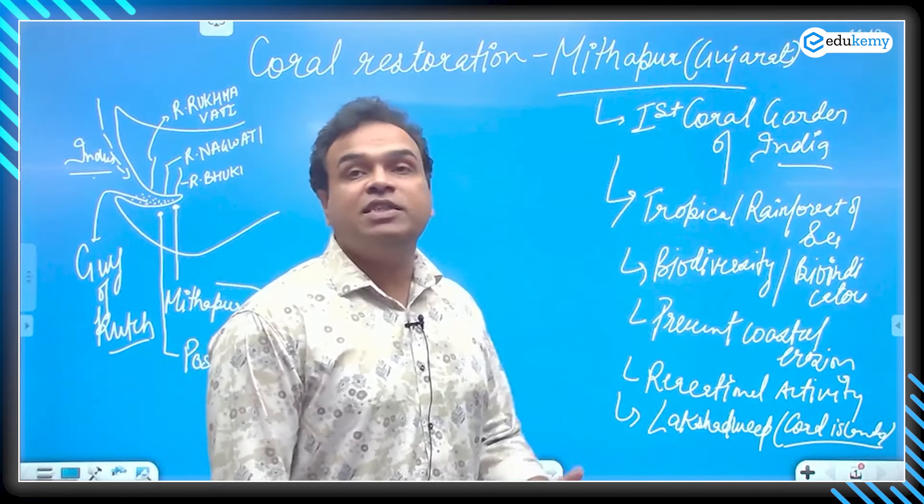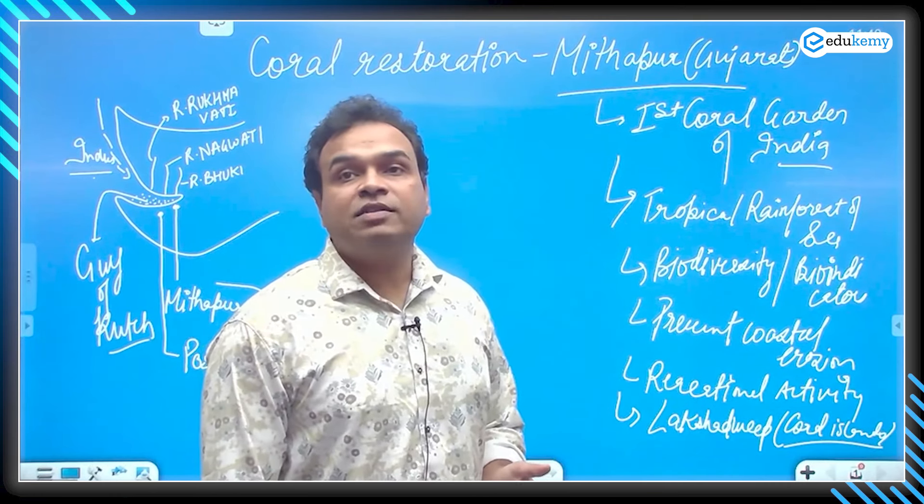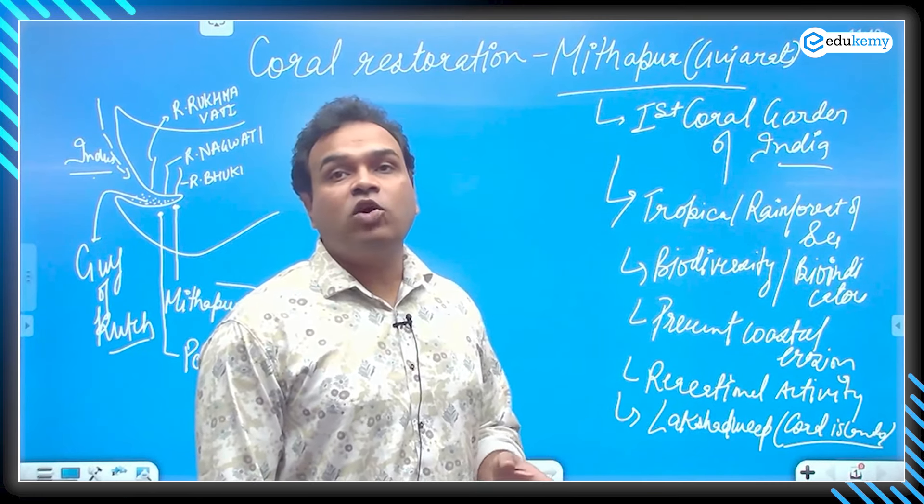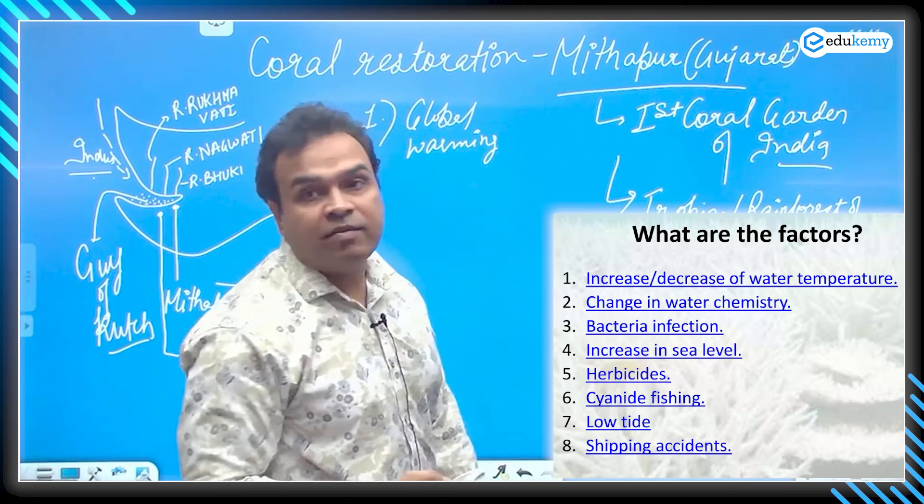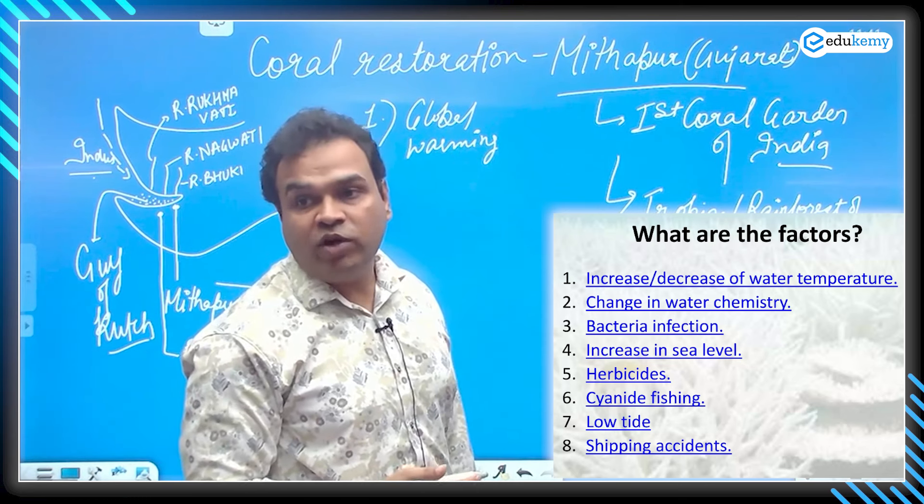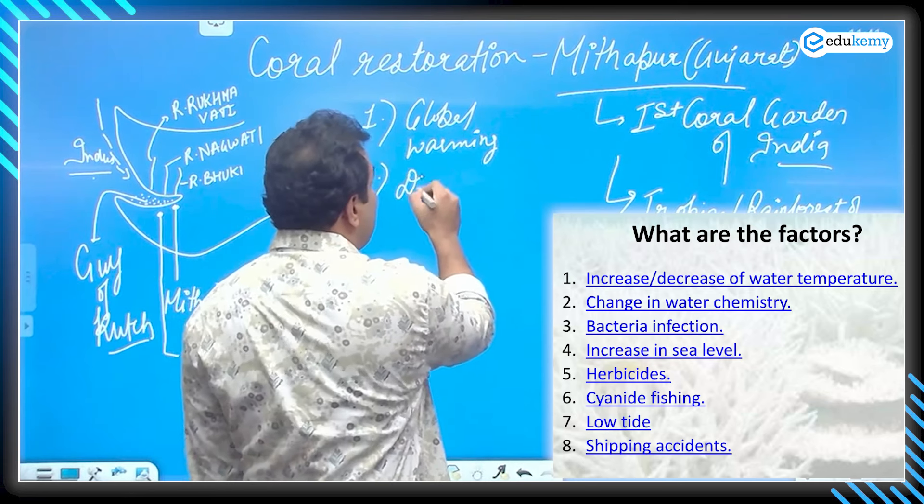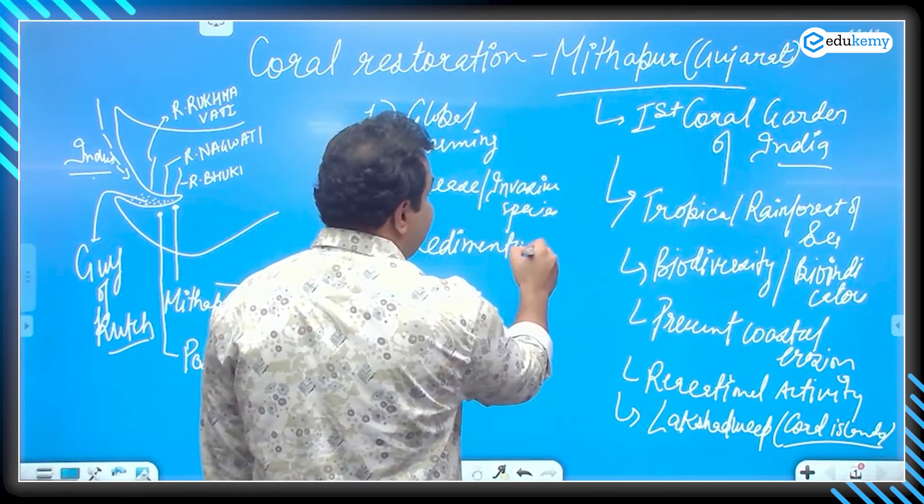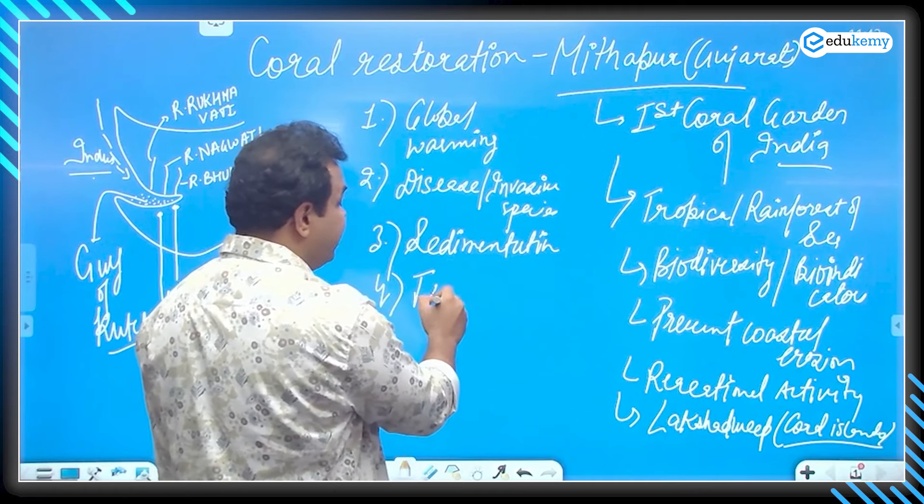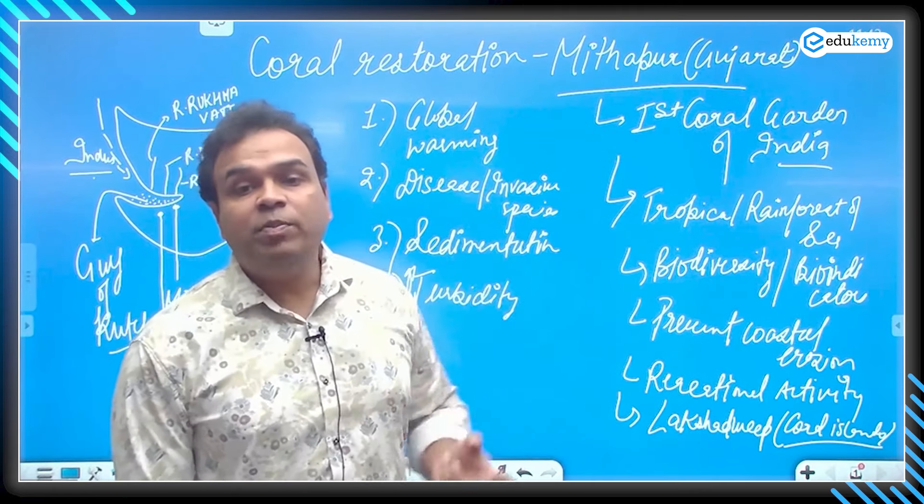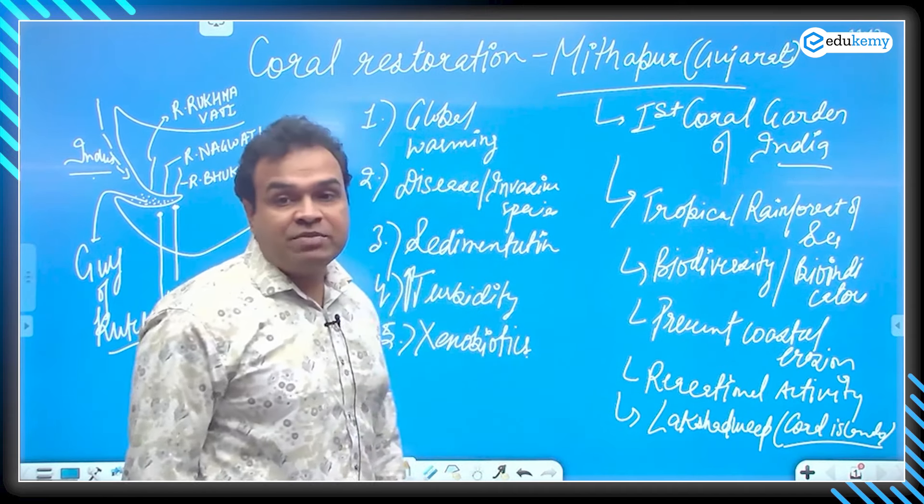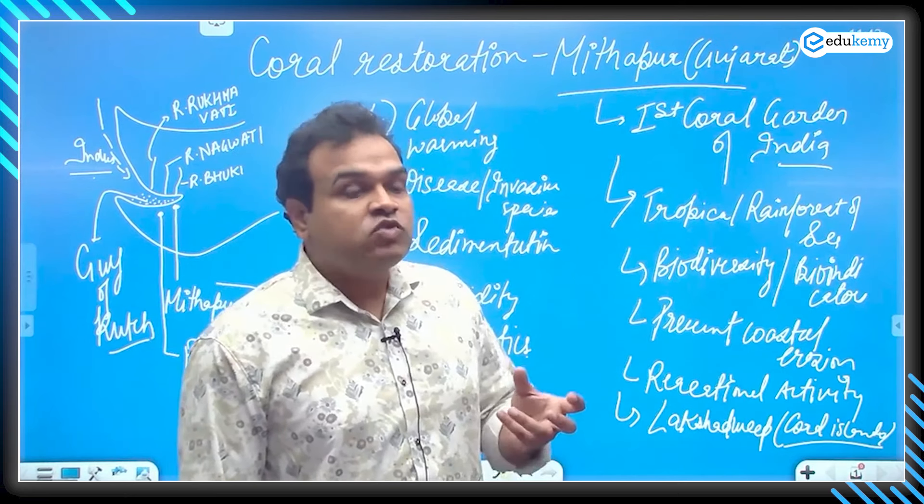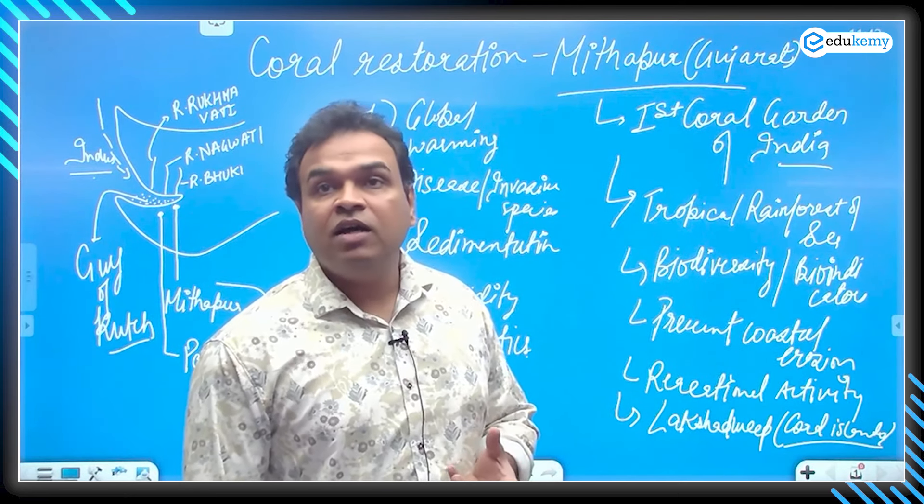Over the period of time, what we have been witnessing is that the corals are under stress and they have been facing coral bleaching. So, what are the reasons? Global warming, rising temperature, because these corals are sensitive to heat. Another disease or invasive species. Sedimentation. If there is more turbidity, less sunlight would penetrate into the sea or ocean. Obviously, that would affect their ecosystem. Or xenobiotics, if there is any chemical that is foreign to the animal life, that is the xenobiotics.